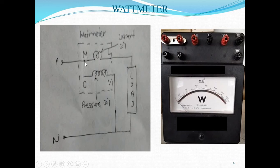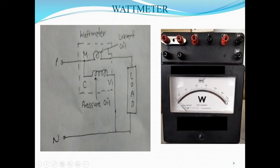We need to connect M and C terminals externally. For example, if we consider this watt meter, this is the M terminal, this is L — the load terminal, C is the common terminal, and V is the voltage terminal. In case of the voltage, there are two ranges: 300 volts and 600 volts. M and C terminals need to be shorted externally while making the connection. The scale of the watt meter is 0 to 1500 watts.